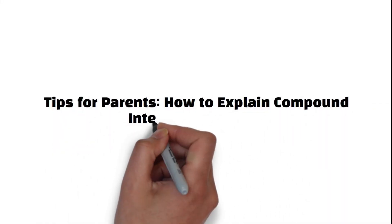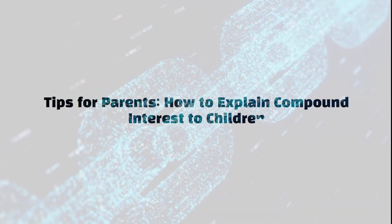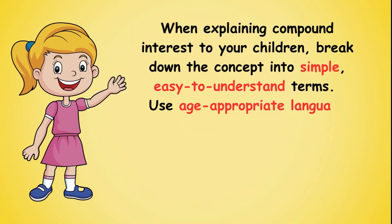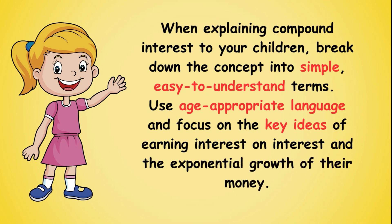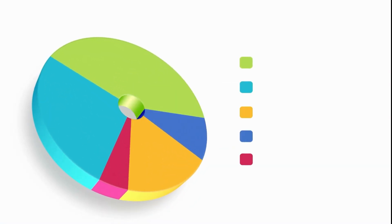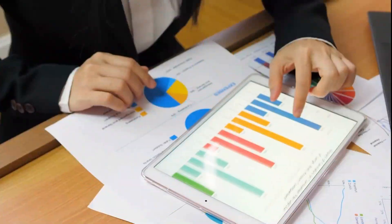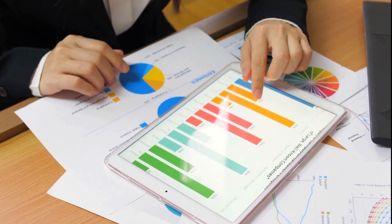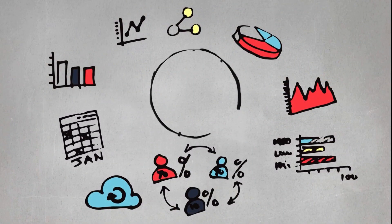Tips for Parents: How to Explain Compound Interest to Children. When explaining compound interest to your children, break down the concept into simple, easy-to-understand terms. Use age-appropriate language and focus on the key ideas of earning interest on interest and the exponential growth of their money. Visual aids such as charts and graphs can help your children better understand compound interest by showing how money grows over time. You can create a simple chart comparing the growth of an investment with simple interest versus compound interest, illustrating the power of compounding.